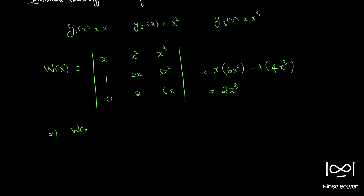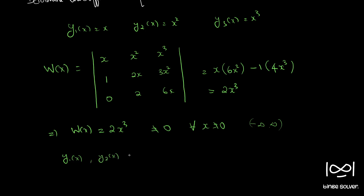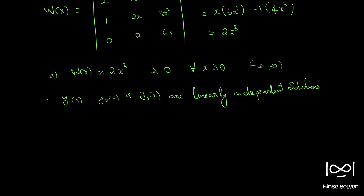The Wronskian is 2x³, which is not equal to 0 for all x in (−∞, ∞) except at x = 0. So for all x ≠ 0 in (−∞, ∞), this Wronskian is not equal to 0. Therefore y1(x), y2(x), and y3(x) are linearly independent solutions.